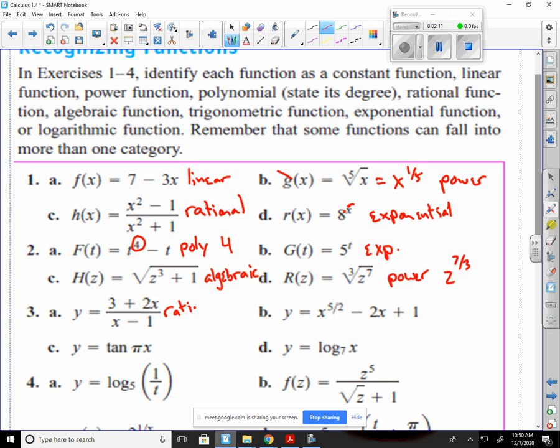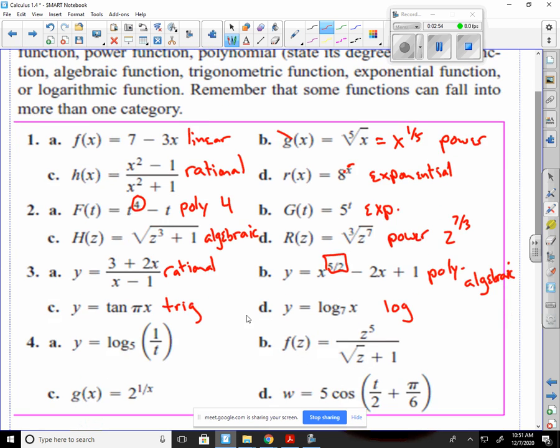3a is a rational. This one you can call a couple different things. You could call this a polynomial, and I wouldn't hate it. But this exponent of a fraction makes me think that it's more of an algebraic function. So I would accept either for that one. Part C, this would be a trig function because we have the tangent in there. And D would be logarithmic. Basically, any time you see a trig function or a log, it's going to be trig or logarithmic, respectively.